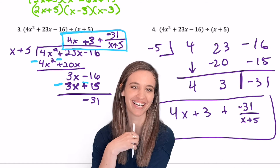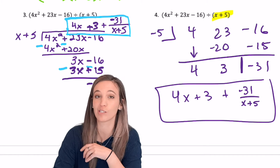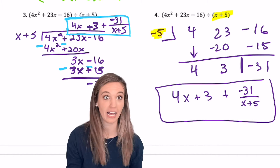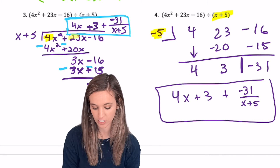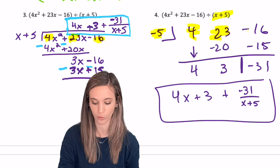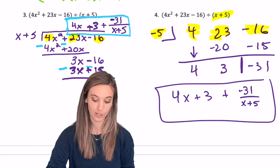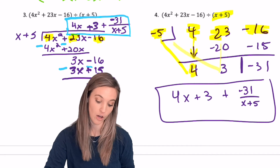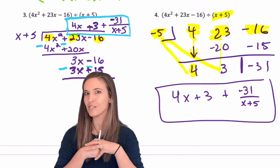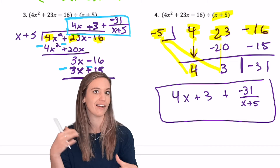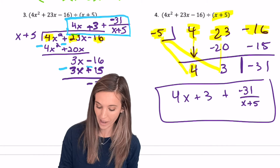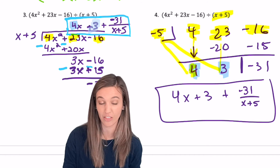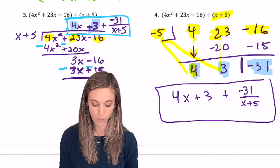Let's learn synthetic division. Since I was dividing by a linear factor — 1x plus 5 — I take the zero for that factor: x plus 5 equals 0, subtract 5, I get x equals negative 5. So I set that up right here. Then I take my coefficients of the polynomial I'm dividing into: the 4, the 23, the negative 16. I bring down that 4, multiply 4 by negative 5 to get negative 20, add down, multiply, add down until I run out of terms. The reason we like synthetic division is because it's adding now instead of subtracting, so I don't have that little subtraction mistake. When I am done, I have a 4 — which is the 4x from my answer — a 3, which is the plus 3 from my answer, and then that negative 31 is my remainder.